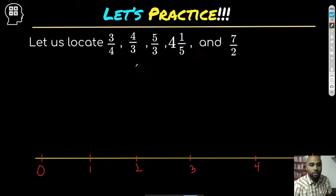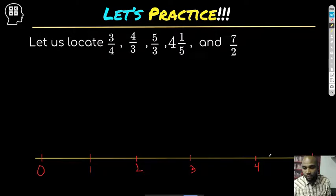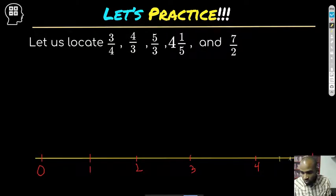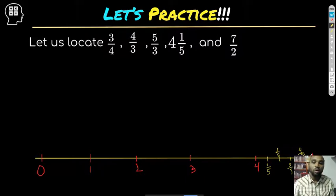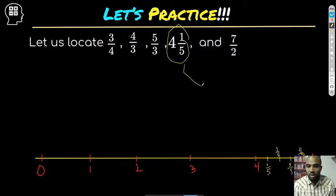Let's start with the low hanging fruit. The easiest one is the mixed number four and one fifth, because it already tells us four — we just need to know it's a little bit more than four. We divide the space into fifths, which means four lines. So we have one fifth, two fifths, three fifths, four fifths. Four and one fifth becomes pretty easy — I can draw my line right there. Check.